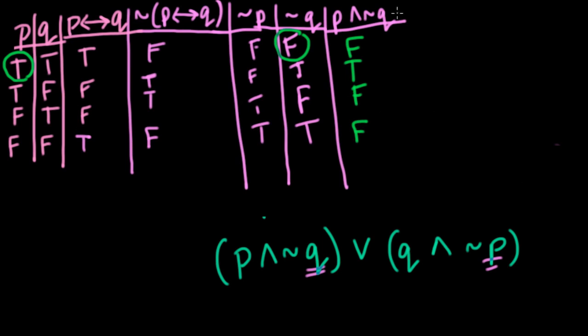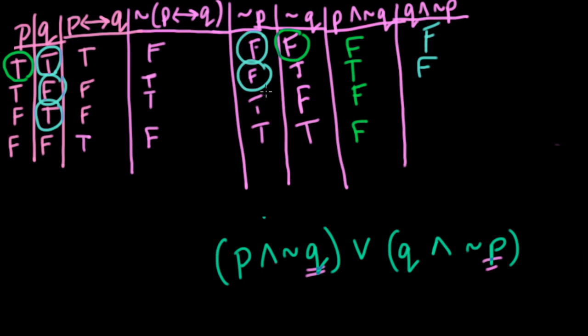Now we can move on to our second statement here, Q and not P. So now we need to evaluate Q and not P. So Q is true to begin with, and not P is false. True and false statement is false. So this is false. Next, we have a false and a false, which is false. And then we have a true and a true, which is true. And then we have a false and a true, which is false.